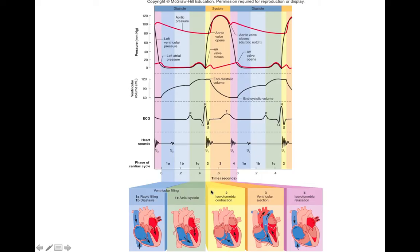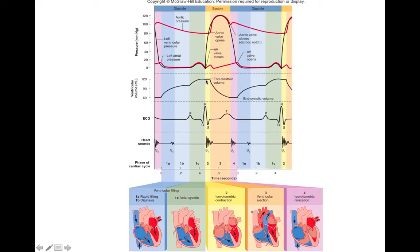When those atrioventricular valves close, because of all the blood turbulence and the tension of the chordae tendineae, you get your S1 heart sound — this is the traditional 'lub' that you hear in the lub-dub. S1 is due mainly to the blood turbulence surrounding your AV valves closing. If we look at our ECG, we see we've got QRS. Also, we have our end diastolic volume — this is how much blood is in your ventricles at the end of diastole, right before the ventricles undergo systole, right before they contract. This is the maximum possible amount of blood in your ventricles.